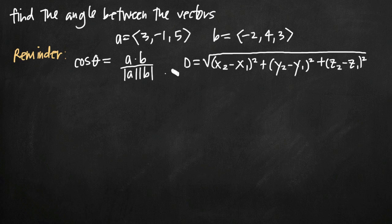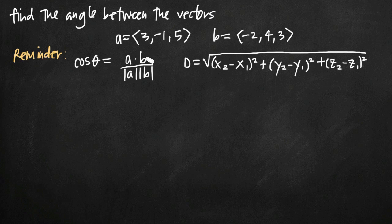We can find the length of a and b using the distance formula for three variables. Remember that each of these vectors starts at the origin and terminates at a coordinate point. So we can find the length of a vector using the distance formula for the distance between those two points. Let's go ahead first and find our dot product — the a dot b value in the numerator of our formula.